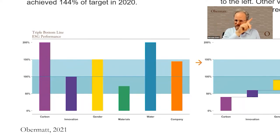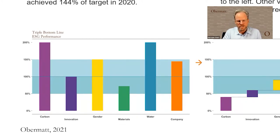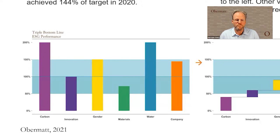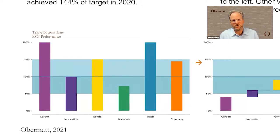For each of those aspects, we used the functions I showed you before and assessed how well they did in 2020. They completely outperformed their carbon target. On the innovation side, they were at 200 percent target achievement. They just matched their target on gender, so they have a value of 100 percent. Gender involved two metrics, and for materials, they wanted to use biodegradable materials, which was an underperformance that year.